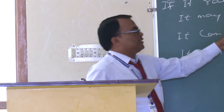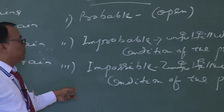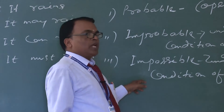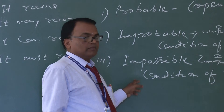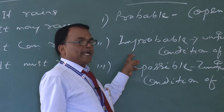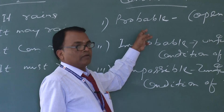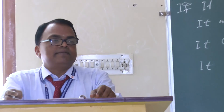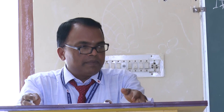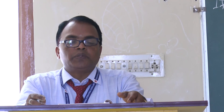So there are three conditions: one is probable — open condition; two is improbable — unfulfilled condition in the present time; three is impossible — unfulfilled condition in the past. These things have already passed; we are thinking now but they can't be recovered. These are the basic types of conditional sentences — probable, improbable, impossible. All understood? Yes, sir. Thank you all. With this, today's class is completed.